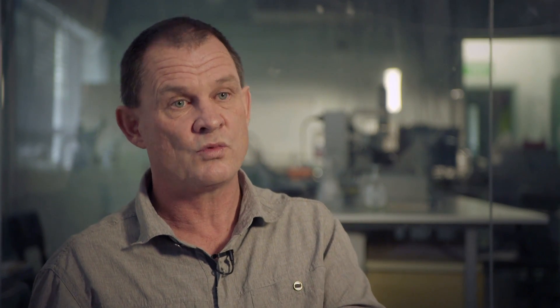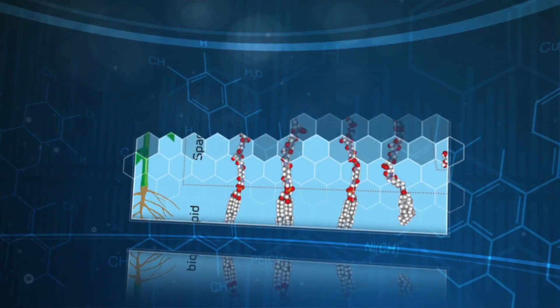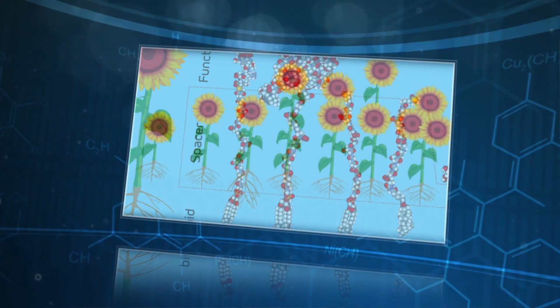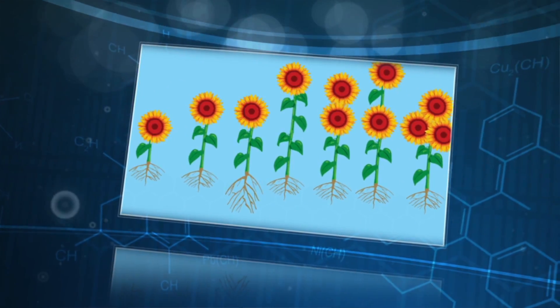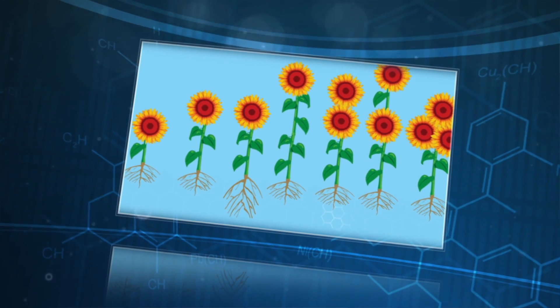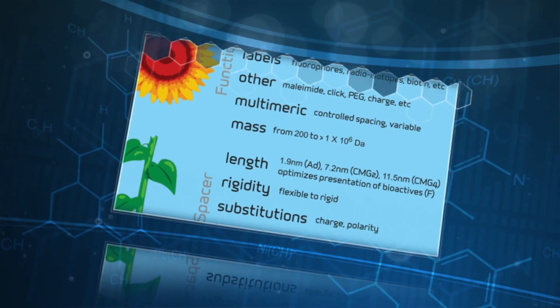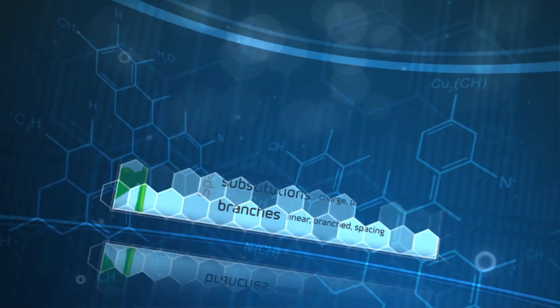The CODE construct itself — the function-spacer-lipid — we draw an analogy of this to a flower. A functional head, a flower head that can be anything you could ever imagine. A spacer which holds it off a surface and brings in functionality, and an anchoring system in the roots.